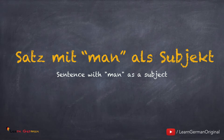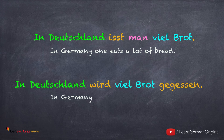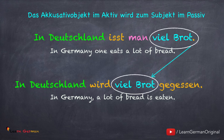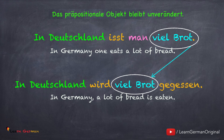Manche Sätze bildet man mit dem Pronomen man als Subjekt. Zum Beispiel: In Deutschland isst man viel Brot. Wenn das Subjekt man ist, fällt es im Passiv weg. In Deutschland wird viel Brot gegessen. Das Akkusativobjekt viel Brot ist jetzt das Subjekt im Passiv. Das Verb steht am Ende in Partizip 2, und in der zweiten Position steht das Hilfsverb werden. Das präpositionale Objekt bleibt unverändert.